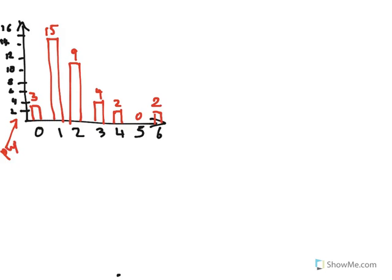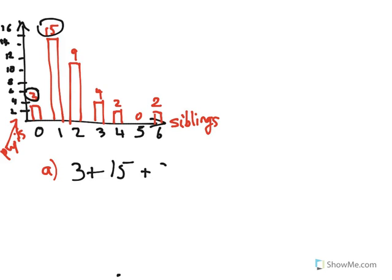The y-axis is number of pupils and the x-axis is number of siblings. To find out how many people took part in the investigation, we just add up all the frequencies. Looking at the graph: three people had zero siblings, fifteen had one, nine had two, four had three, two had four, zero had five, and two had six. Adding all those numbers together gives us 35 people investigated.